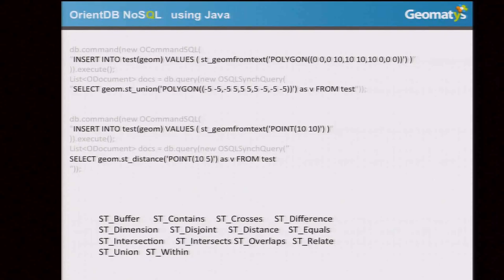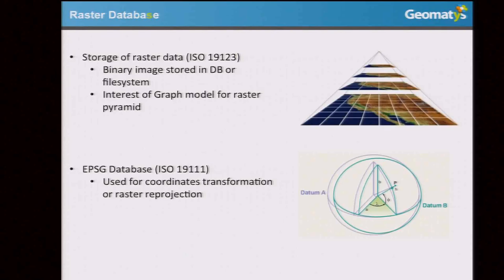After building these components, we had to select use cases to test them. The first we tried was storing raster data in the database, following the ISO 19123 coverage model. We stored the raster into the database, which is also useful for pyramids that are created — you get a pretty efficient raster database using this. Also, the EPSG database following ISO 19101 is stored in this graph database, which is easy to embed in an application and easy to retrieve coordinate transformation operations from.